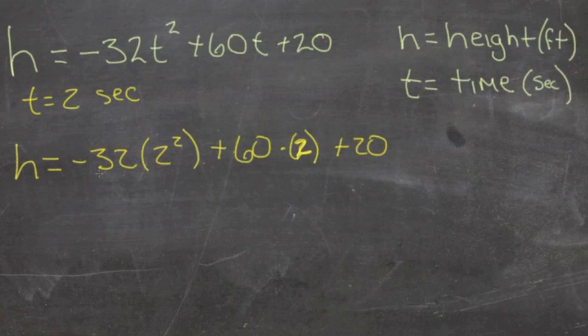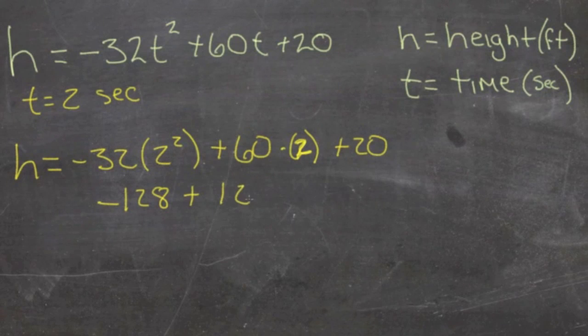So we're going to get negative 32 times 4, that's negative 128, plus 60 times 2 is 120, plus 20.